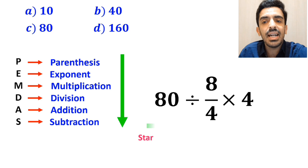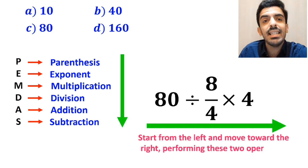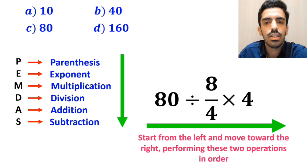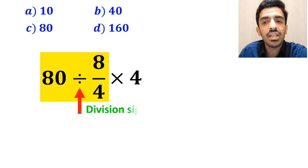In this situation, the best strategy is to start from the left and move toward the right, performing these two operations in order. So we'll start with the expression 80 divided by 8 over 4.